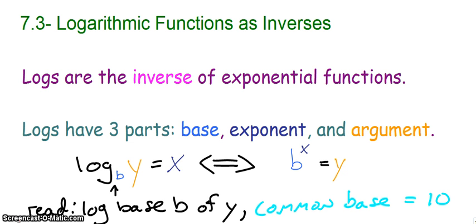So logs have three parts. Their base, the exponent, and the argument. Written as an exponential, we have the base, the exponent, and the argument, which we usually call the result or the answer with exponentials.